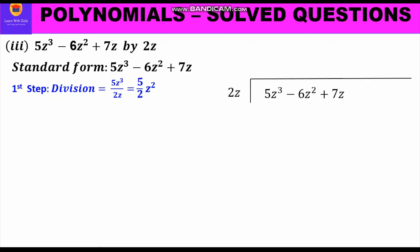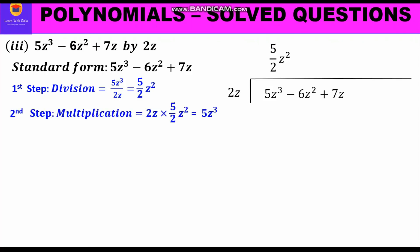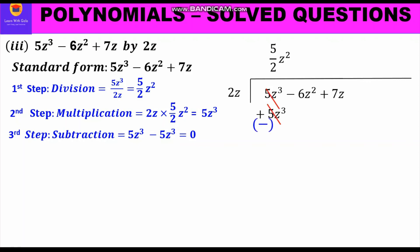We start the three-step approach. First, division: 5z³ divided by 2z equals 5/2 · z², which we write as the quotient. Second, multiplication: 2z times 5/2 · z² equals 5z³, written below the first term of the dividend. Third, subtraction: 5z³ minus 5z³ — one is positive, one is negative — they cancel and we get 0.